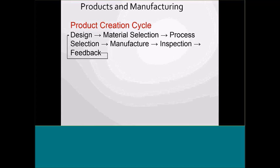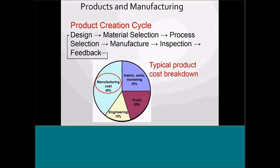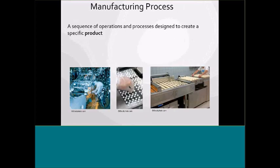When we look at products and manufacturing, we have the creation cycle: design, material selection, process selection, manufacture, inspection, and feedback. There's also a cost breakdown I try to emphasize: administrative sales and marketing is about 25%, profit about 20% if we can get that, engineering about 15%, but manufacturing costs are 40%. That's where we can actually do a lot of cost savings, although rework is another area to address.